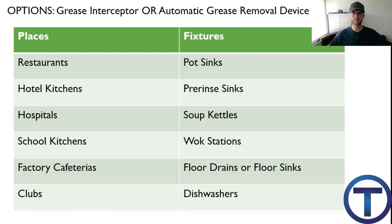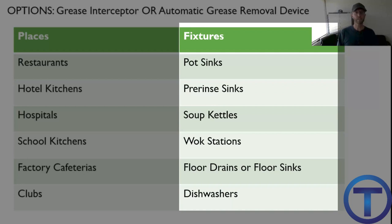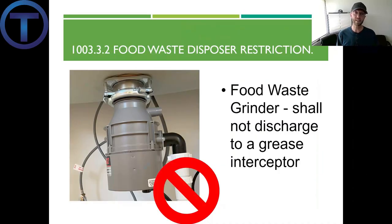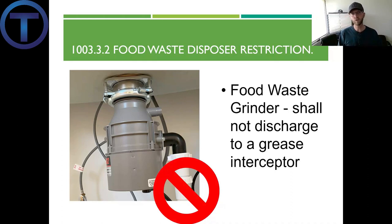Some fixtures required to go through a grease interceptor or automatic grease removal device include pot sinks, pre-rinse sinks, soup kettles, wok stations, floor sinks and floor drains, and dishwashers. Section 1003.3.2 states that food waste disposers, or garbage disposals, shall not discharge into a grease interceptor. The reason is not that they don't have grease — they do — but because they output so much liquefied food waste, it would make a total mess and inhibit the grease interceptor's ability to separate grease from that ground-up food.